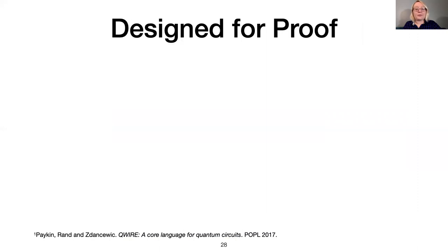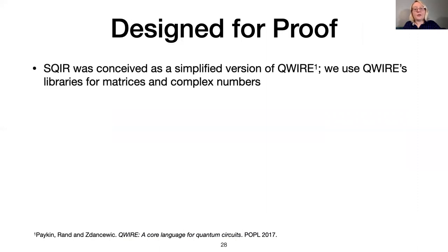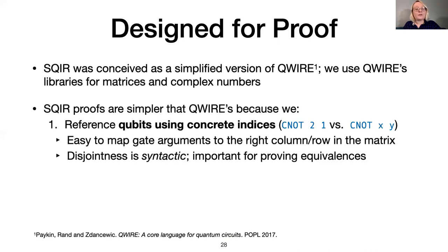Although SQUIRE's syntax and semantics are simple, we have put careful thought into their design. We had originally intended to use QWIRE, presented at POPL 2017, as our program representation for VOQC. However, we found it difficult to state and prove properties about transformations of QWIRE programs, which led us to develop SQUIRE. There are three key differences between SQUIRE and QWIRE. First, SQUIRE refers to qubits using concrete indices. In other words, natural numbers that index into the global qubit register. This makes it trivial to map a gate argument to the right column and row in the denoted matrix. It also means that disjointness and well-typedness are syntactic. We can tell if two gates apply to different qubits, or if a single gate application uses the same qubit twice, simply by comparing the arguments.